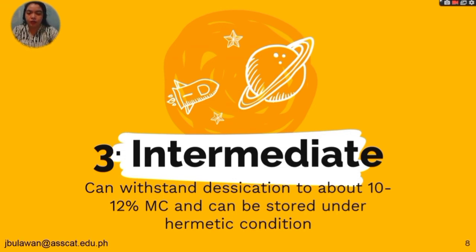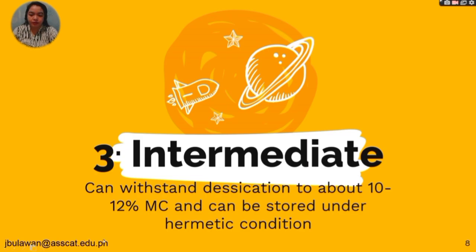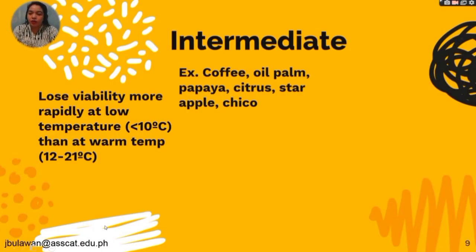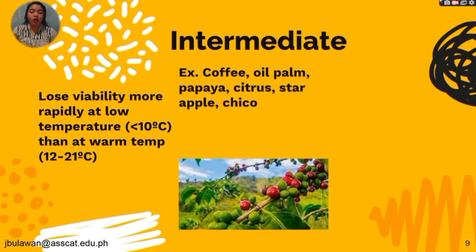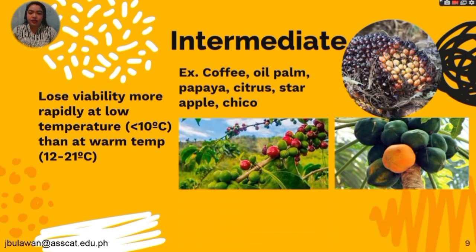Now let's go to intermediate seeds, which can withstand desiccation to about 10 to 12% moisture content and can be stored under hermetic conditions. Hermetic condition means completely sealed, especially against the escape or entry of air. Intermediate seeds lose viability more rapidly at low temperature — less than 10 degrees Celsius — than at warm temperature from 12 to 21 degrees Celsius. Examples of intermediate seeds are coffee, oil palm, papaya, citrus, star apple, and chico.